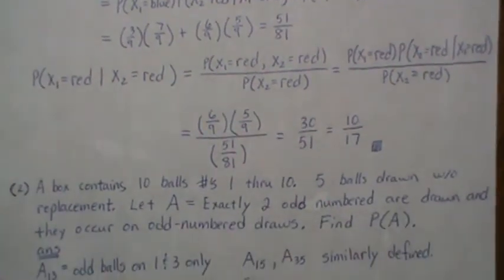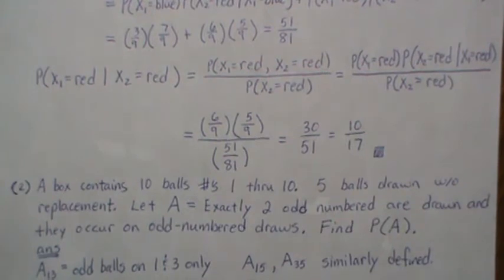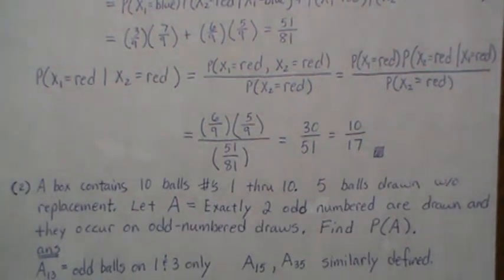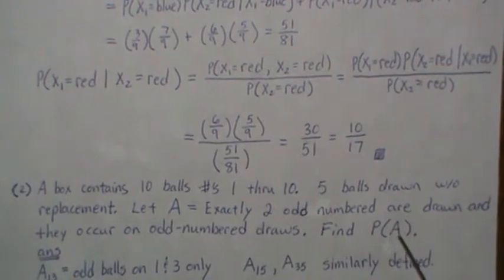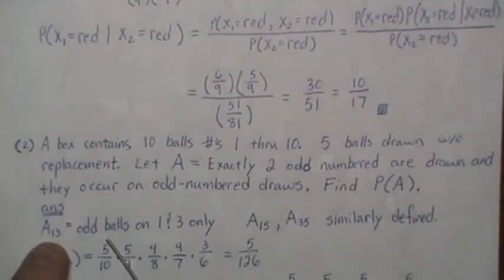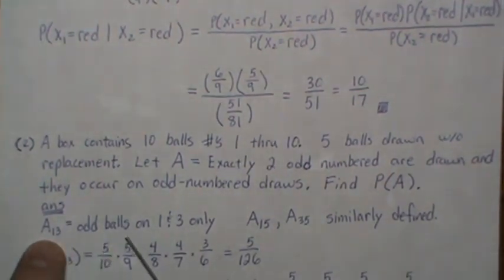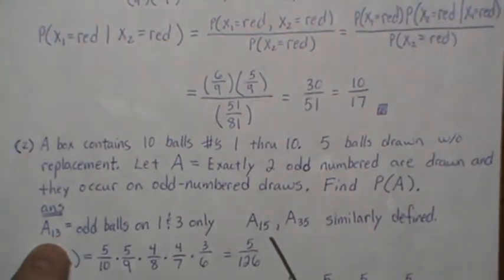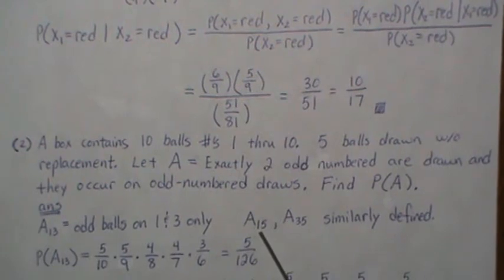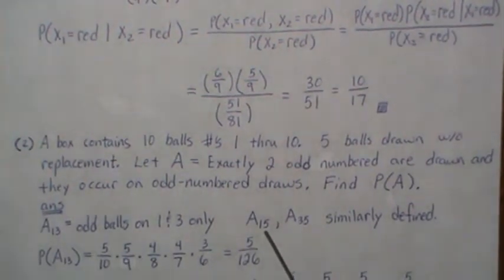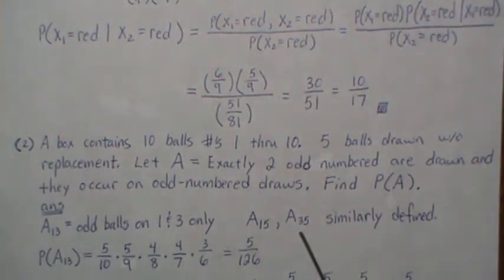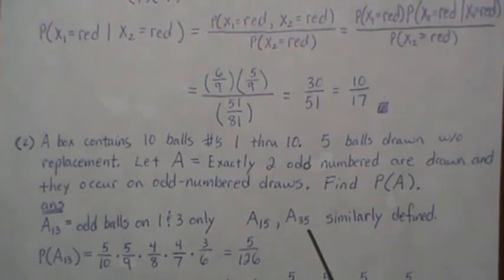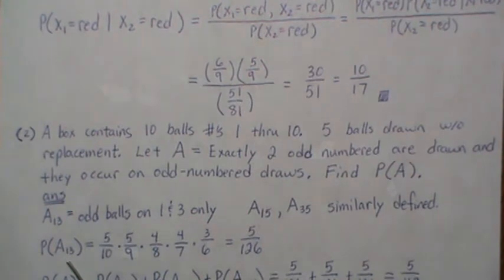Problem two: a box contains 10 balls numbered 1 through 10. Five balls are drawn with replacement. Let event A be that exactly two odd-numbered balls are drawn and they occur on odd-numbered draws. Find the probability of A. We introduce notation: A_{1,3} means odd balls on draws 1 and 3 only, with even on draws 2, 4, and 5. A_{1,5} means odd balls drawn on the first and fifth draw, and A_{3,5} means odd balls drawn on draws 3 and 5.